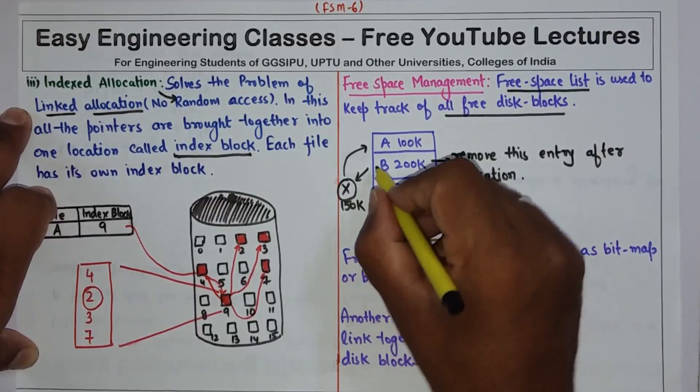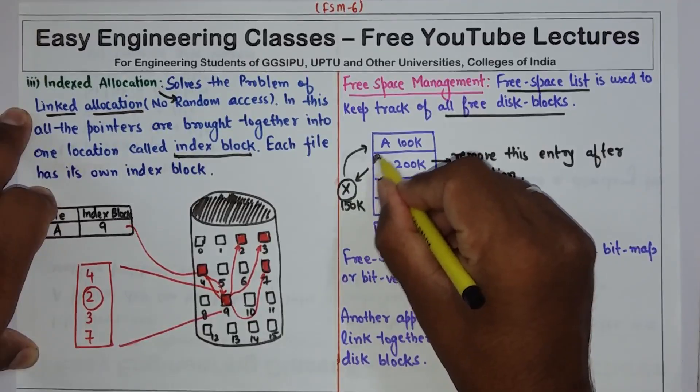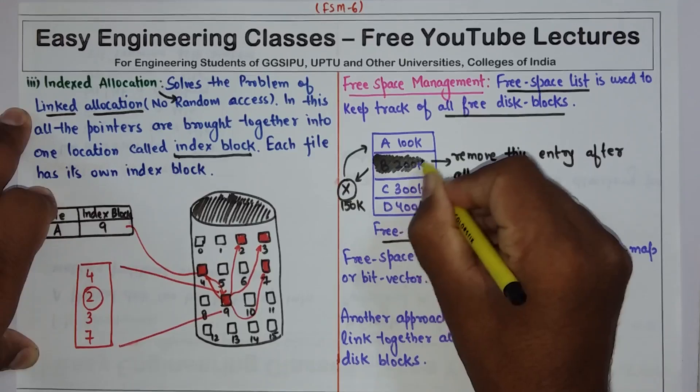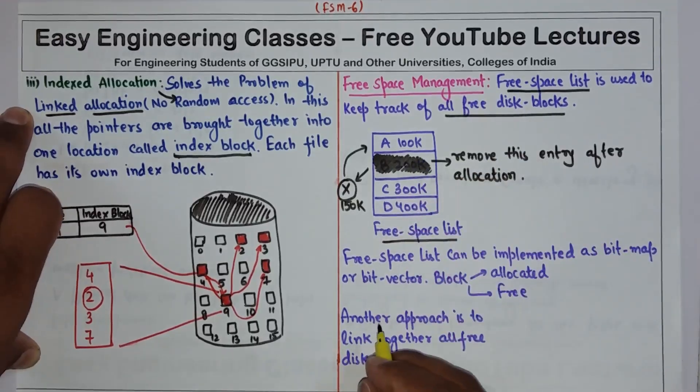So now the new free space list will contain entries only this much. This entry is deleted.